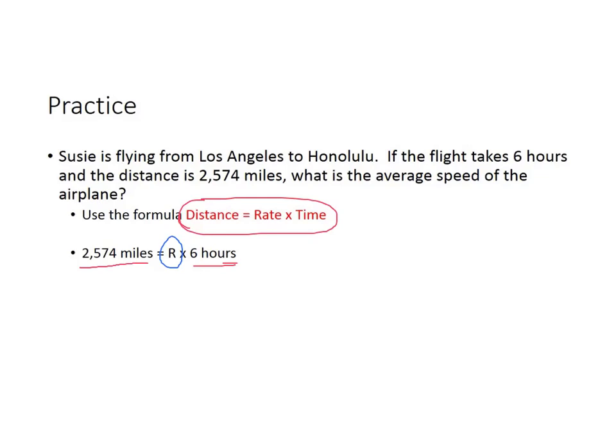And as I know your fifth grade math teacher taught you, to solve for a variable you have to get it by itself. So what we're gonna do is we're gonna get rid of the six hours. So we're gonna do the opposite. Instead of multiplying by six hours, we're going to divide by six hours. And if you do it for one, you have to do it for the other.